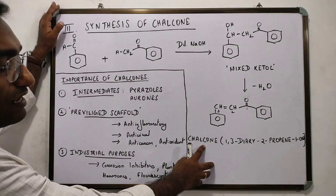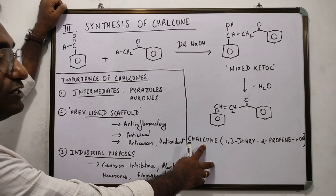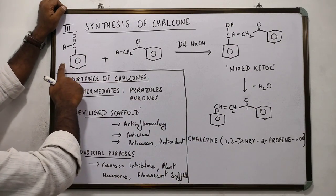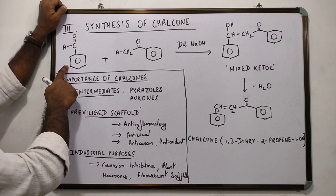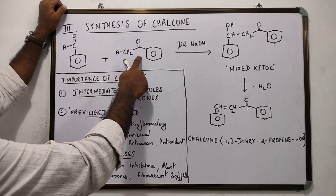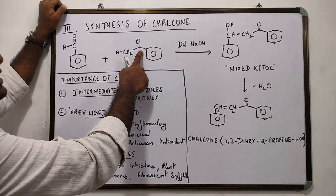How to prepare chalcones? For that, you have to go for Claisen-Schmidt condensation, in which you will use a benzaldehyde and acetophenone, which is a methyl ketone, an aryl methyl ketone.